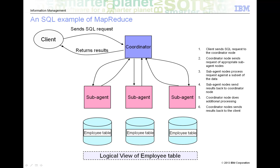Assume that you have an employee table that is partitioned across multiple nodes in your DB2 system — meaning portions of the employee table reside on various nodes in the database cluster, although to the user the employee table appears as a single entity. A client program connects to the coordinator node and sends a request to total the number of employees in each job classification. The coordinator node in turn sends that request to each of the nodes on which a portion of the employee table resides.